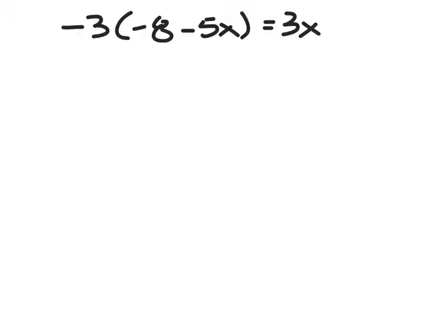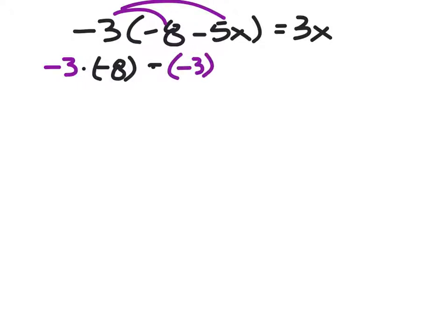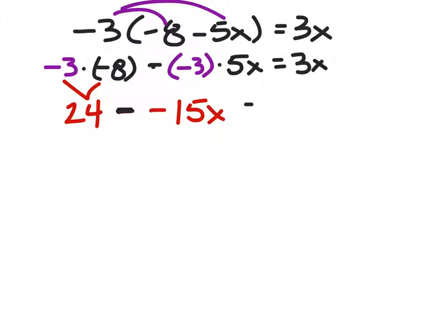On this one, to get full credit it's important to show your multiplication. I have negative 3 times negative 8 in parentheses, minus negative 3 times 5x, equals 3x. This shows the distribution. Negative 3 times negative 8 is 24, and negative 3 times 5x is negative 15x. So 24 plus 15x equals 3x.